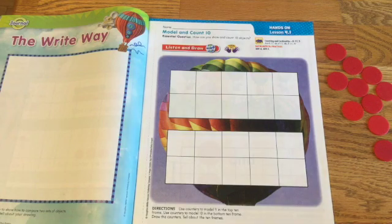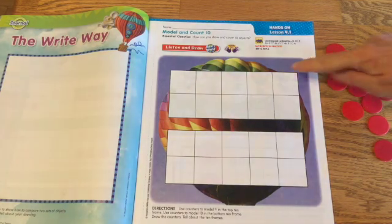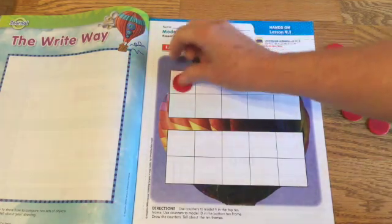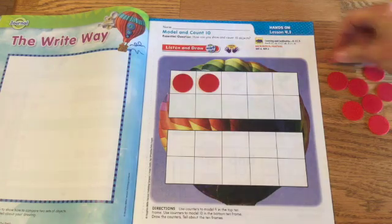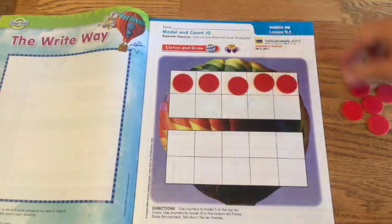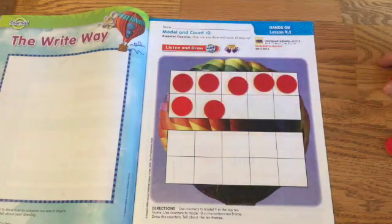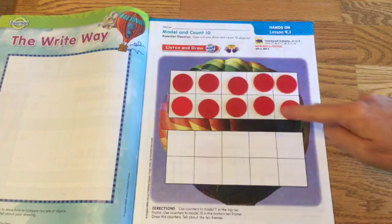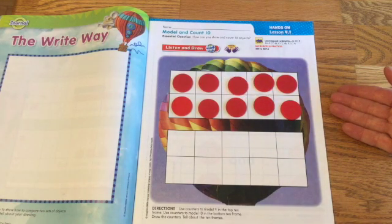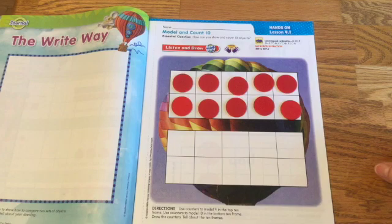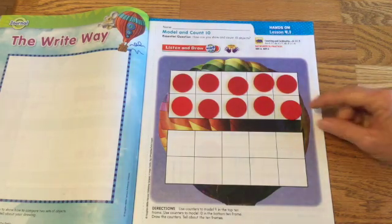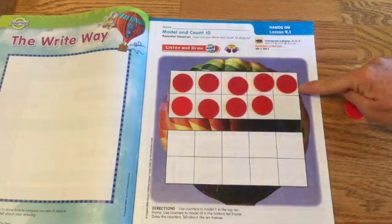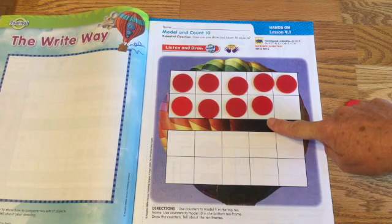It says use counters to model nine. All right. So here we have a ten frame. And the great thing about ten frames, if you fill them up. If you fill them up, we know that that's a ten frame. So if they're all full, we don't even need to count it. We know that's ten. If we just fill it up. But it said to make nine. So I'm going to take one off.